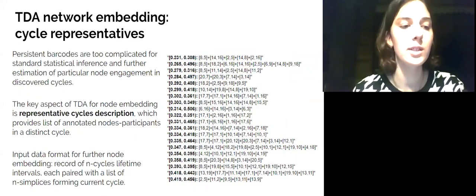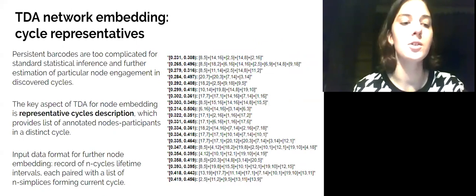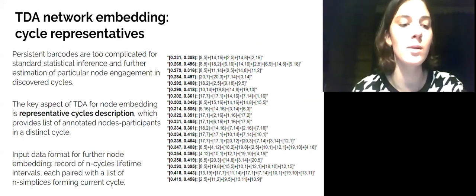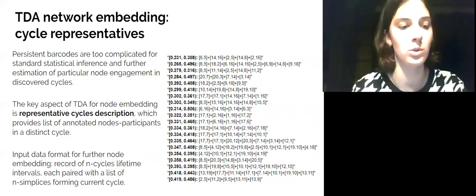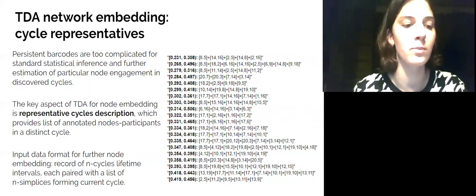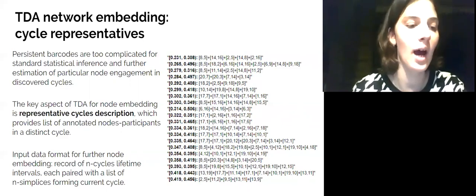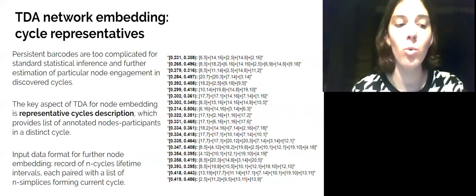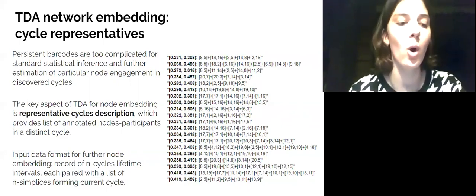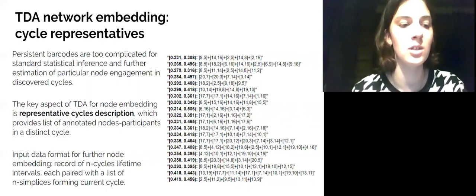However, persistent barcodes are hard to interpret with standard statistical metrics, and besides, they do not provide any information about particular node involvement in the filtration process. For successful application of TDA to node embedding problem, a tool from a TDA in R package for TDA is used. Cycles representative description allows to create a correct input data for further embedding process, where every lifetime interval displayed on barcode collection is paired with a list of annotated node participants. Every node then was embedded in a space with dimension equal to number of collected intervals, and encoded in terms of its participation in each cycle.